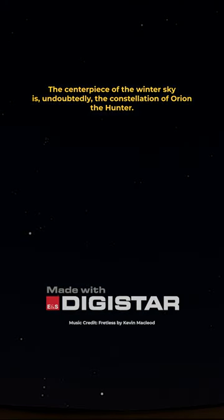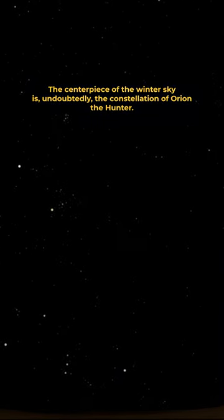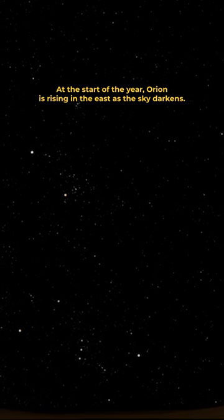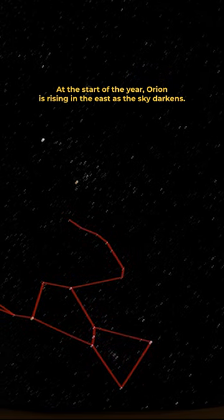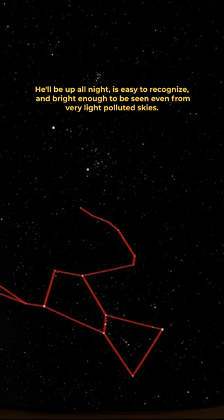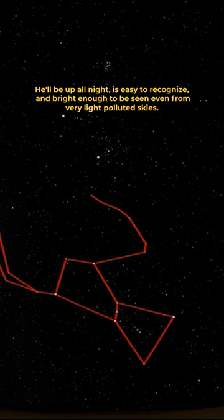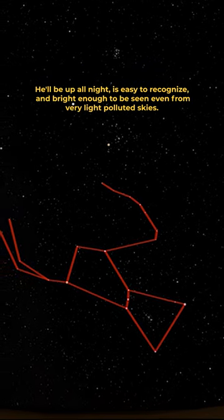The centerpiece of the winter sky is undoubtedly the constellation of Orion the Hunter. At the start of the year, Orion is rising in the east as the sky darkens. He'll be up all night, is easy to recognize, and bright enough to be seen even from very light-polluted skies.